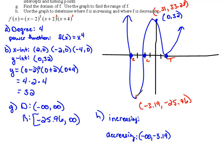Then we turn around and we go up. So it starts increasing at negative 3.19, and it increases over to the negative 0.31. Remember, we use x values only to identify intervals of increasing and decreasing.